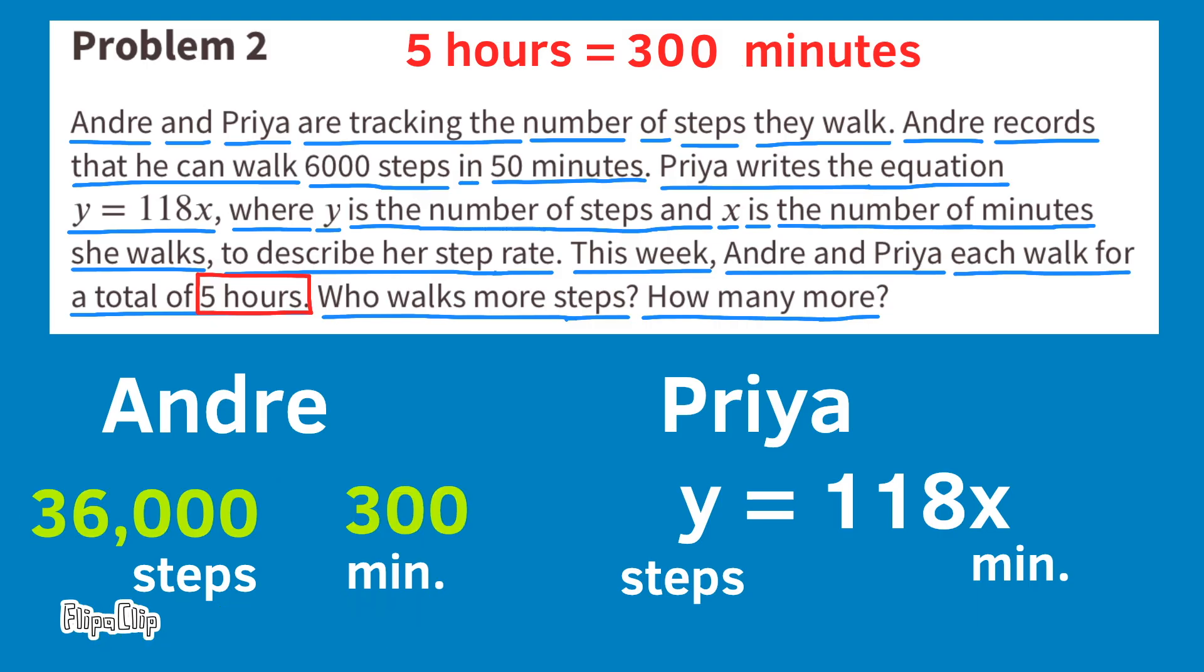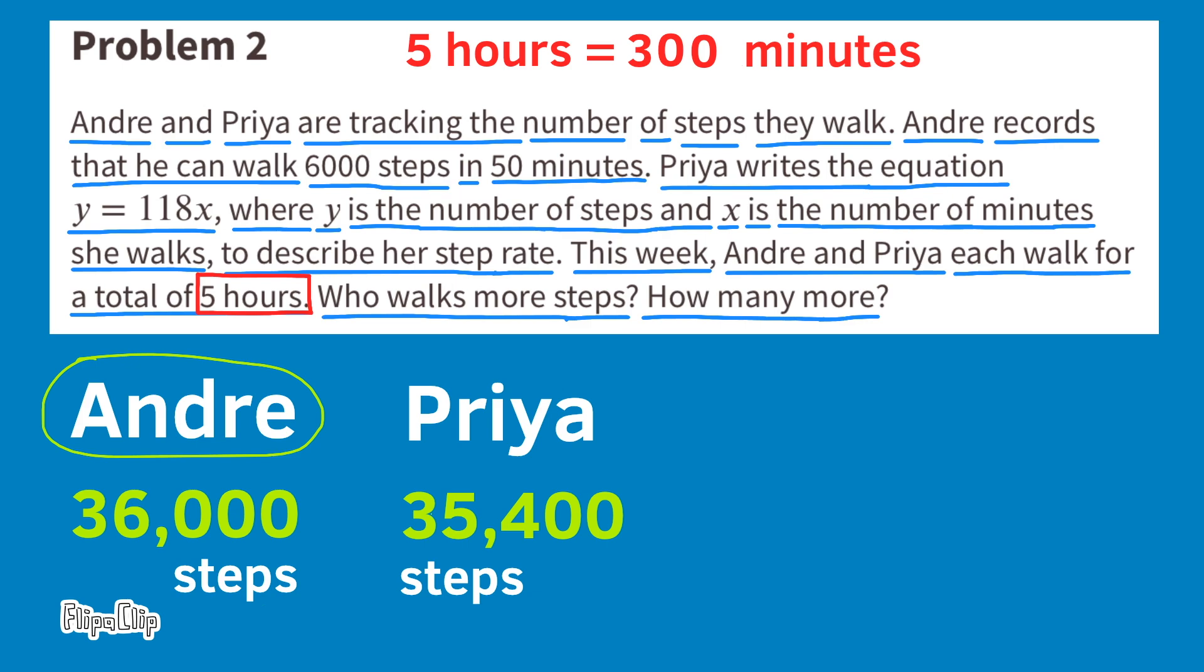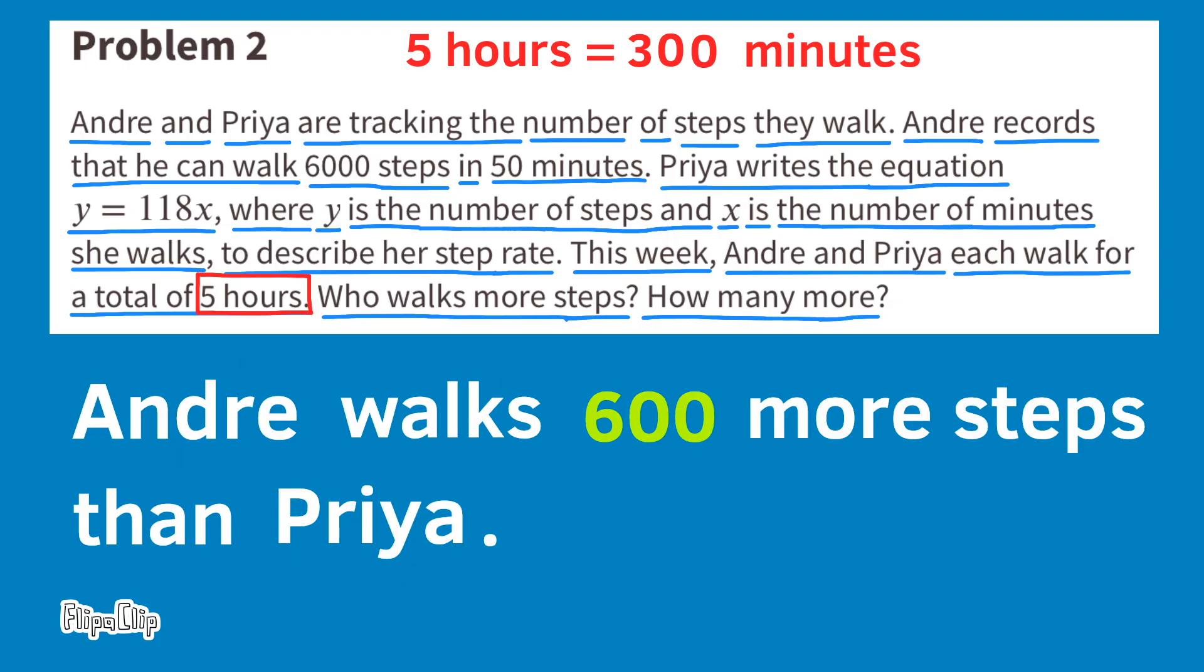In Priya's equation, X represents the number of minutes. And since she's going to be walking 300 minutes, we need to multiply 118 times 300 minutes. 118 times 300 is 35,400. For Priya, that's 35,400 steps in 300 minutes, or 35,400 steps in 5 hours. Andre walks the most steps. Andre's 36,000 steps minus Priya's 35,400 steps means Andre walks 600 more steps than Priya.